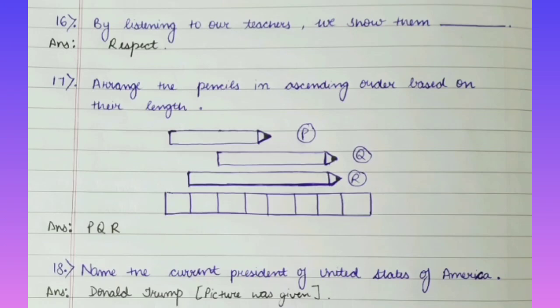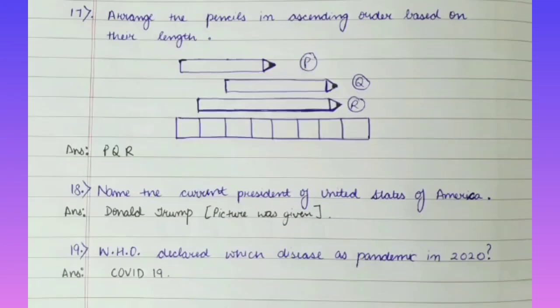Question No. 17: Arrange the pencils in ascending order based on their length. Answer is P, Q, R. Question No. 18: Name the current President of United States of America. Answer is Donald Trump. Here also a picture was given, so we were just to identify.